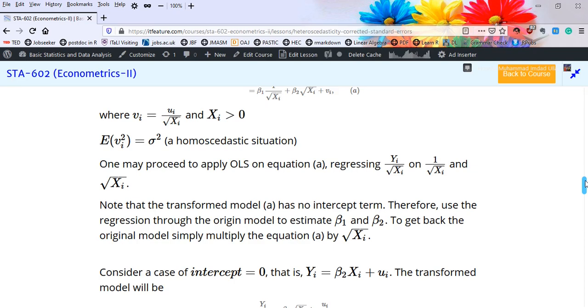Therefore, to estimate beta 1 and beta 2, one has to fit regression through the origin. To get back to the original model, simply multiply the transformed model by square root of X_i.